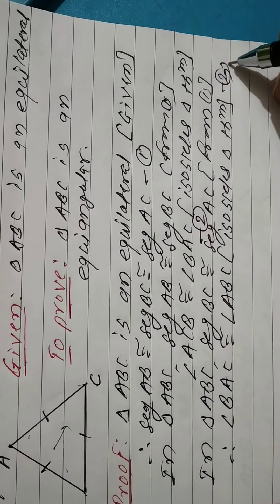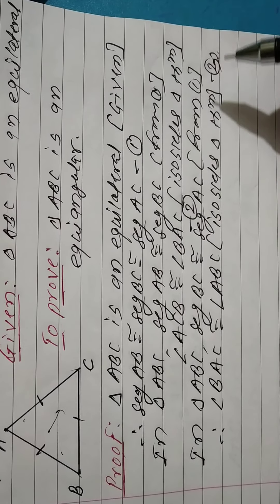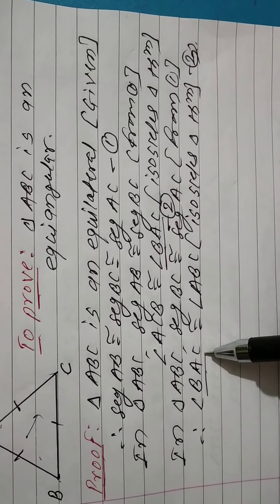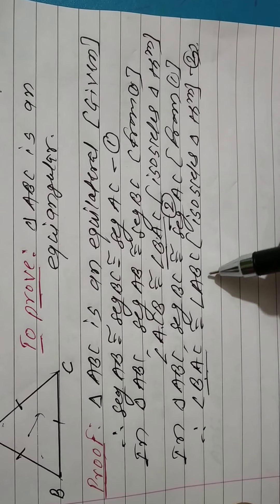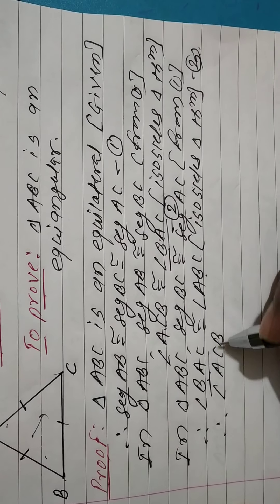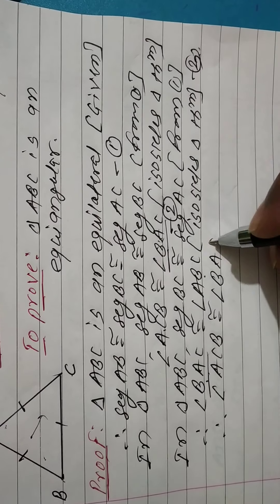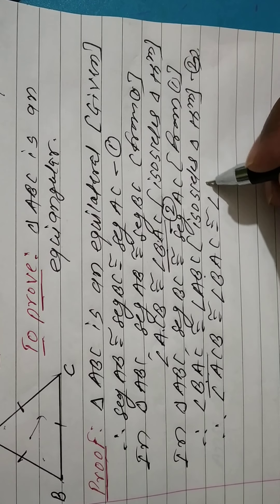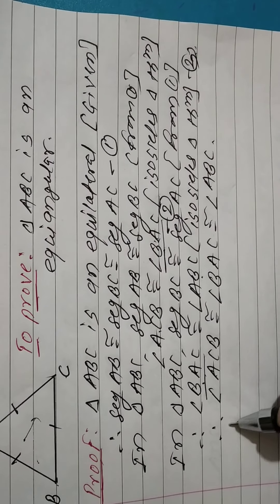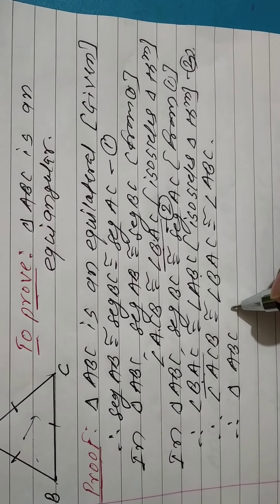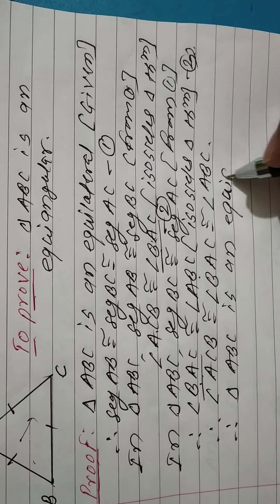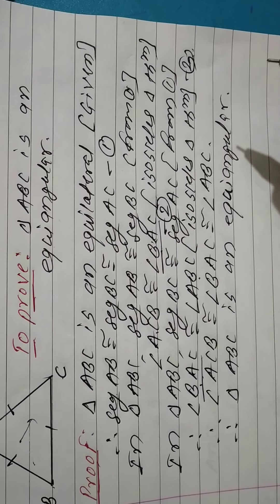From equations two and three, angle BAC is congruent to angle ACB, which is congruent to angle ABC — all three angles are equal. Therefore, triangle ABC is equiangular. Hence, it is proved.